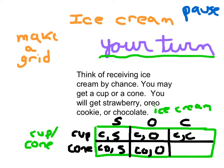And so these are the possible outcomes: cone and chocolate ice cream, cup and chocolate ice cream, cup Oreo cookie, cone Oreo cookie, cone strawberry, cup strawberry.